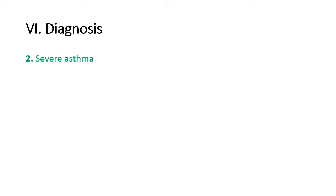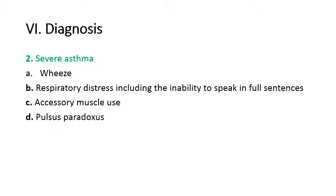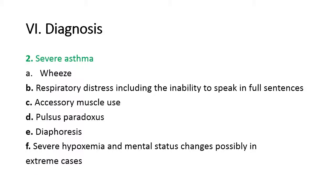2. Severe asthma: A. Wheeze. B. Respiratory distress, including the inability to speak in full sentences. C. Accessory muscle use. D. Pulsus paradoxus. E. Diaphoresis. F. Severe hypoxemia and mental status changes, possibly in extreme cases.